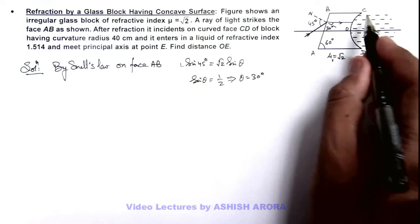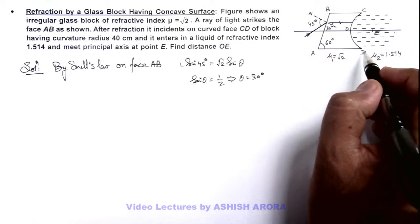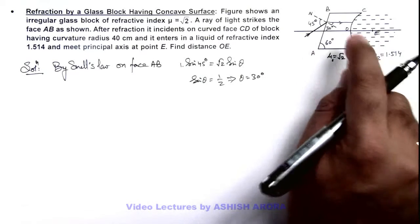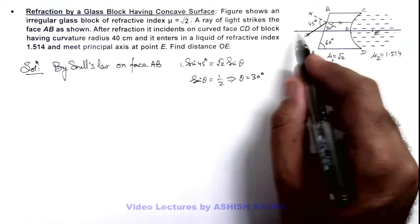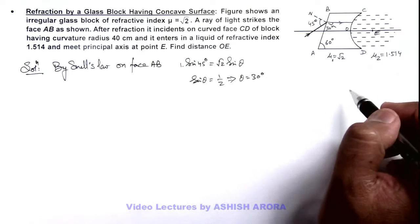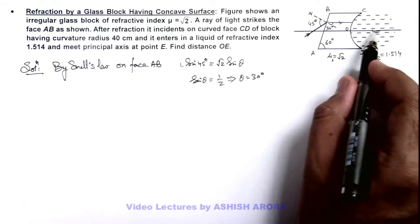So in this situation, for this curved surface CD, the light ray is incident on it parallel to the principal axis. That means for the surface we can assume the object is at infinity, and we can find out the point where it is producing the image, and that is the point where the light ray will pass through the principal axis, the point E.